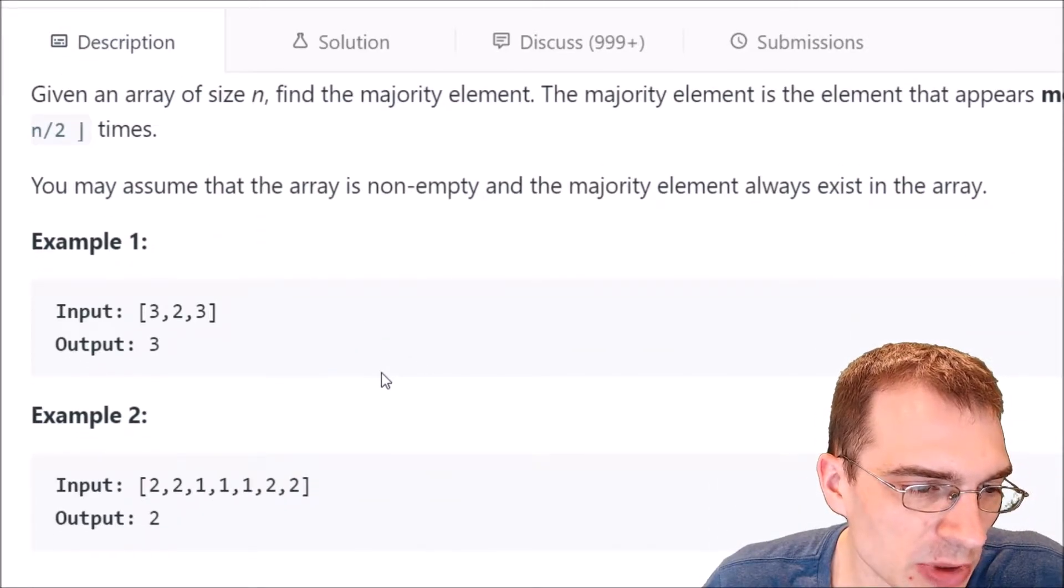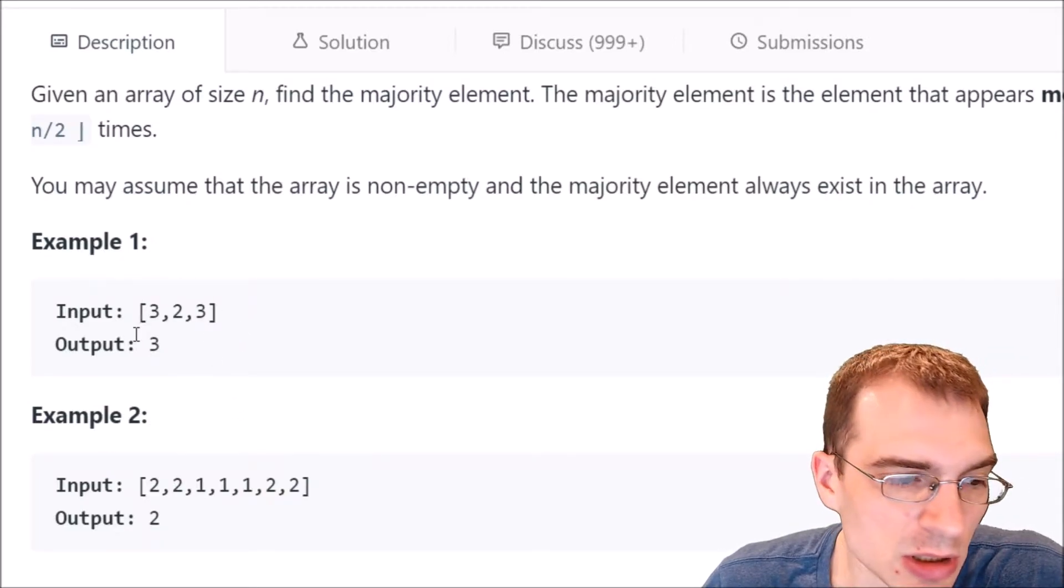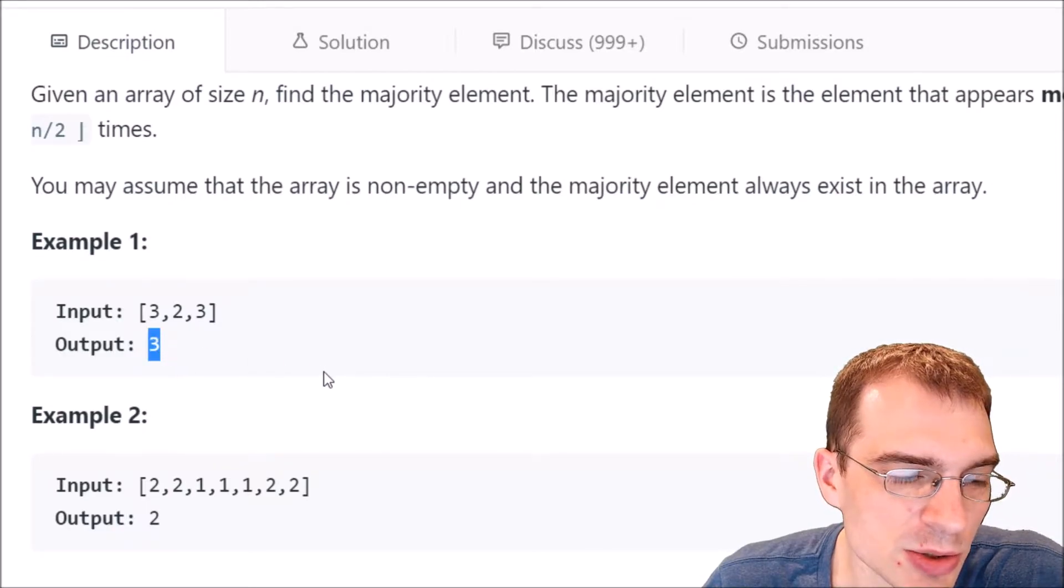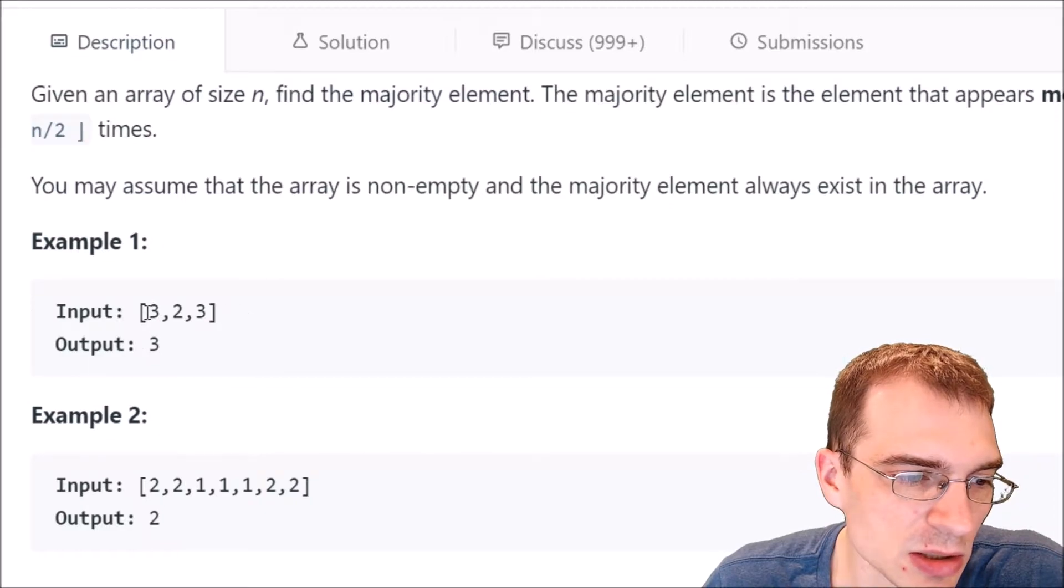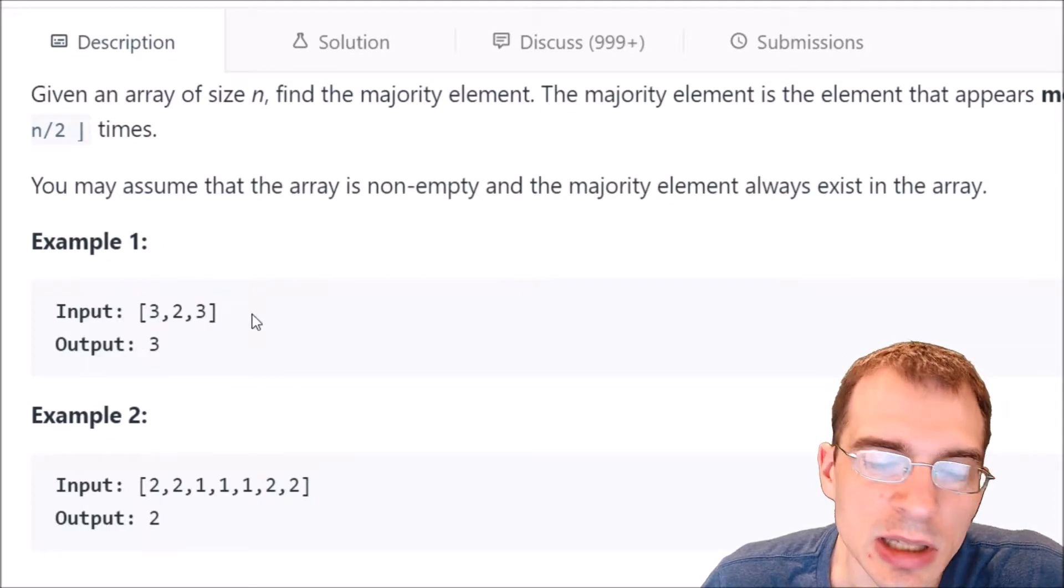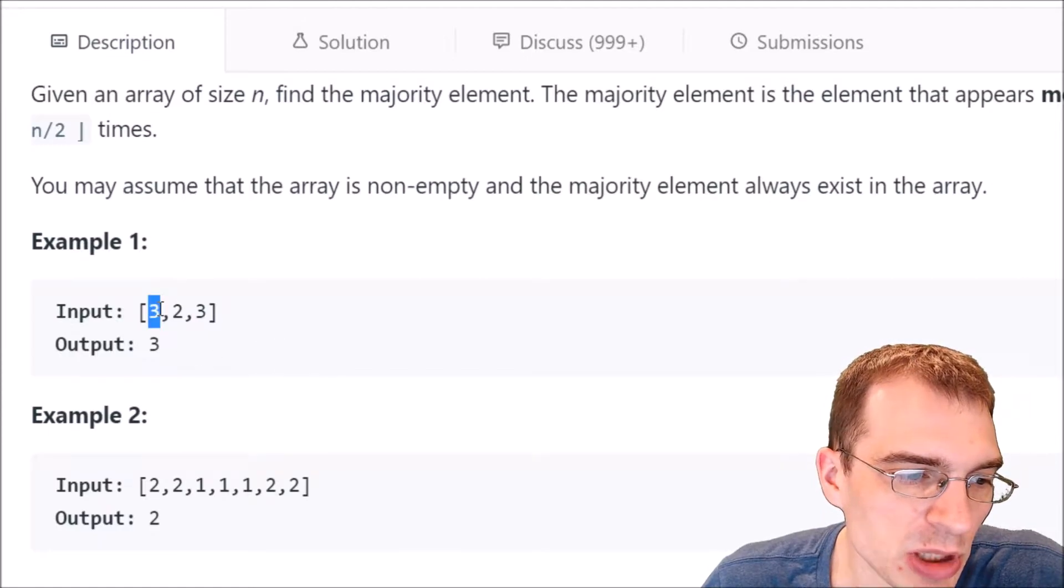And we're given a couple examples here. We have a list of 3 with 3, 2, 3 in it. And the majority element here is 3 because 3 appears more than n divided by 2 times. So in this case the list is length 3, n divided by 2 would be 1.5. So 3 appears more than 1.5 times, it appears 2 times.